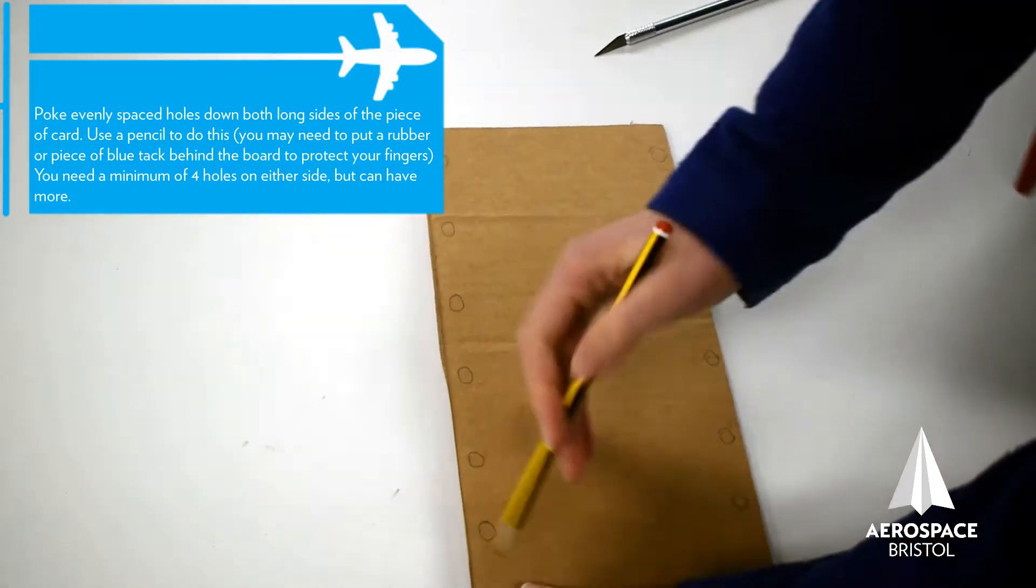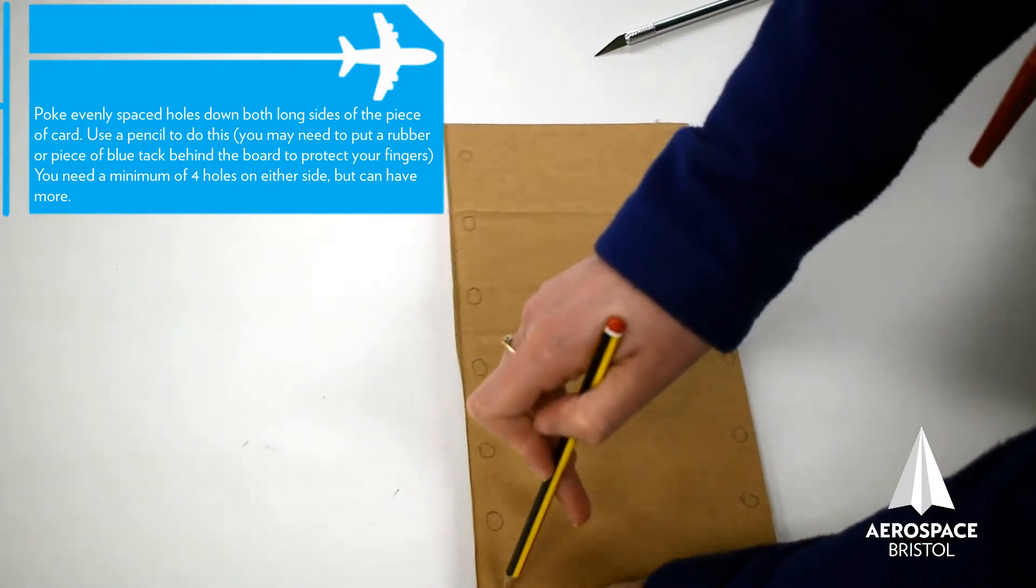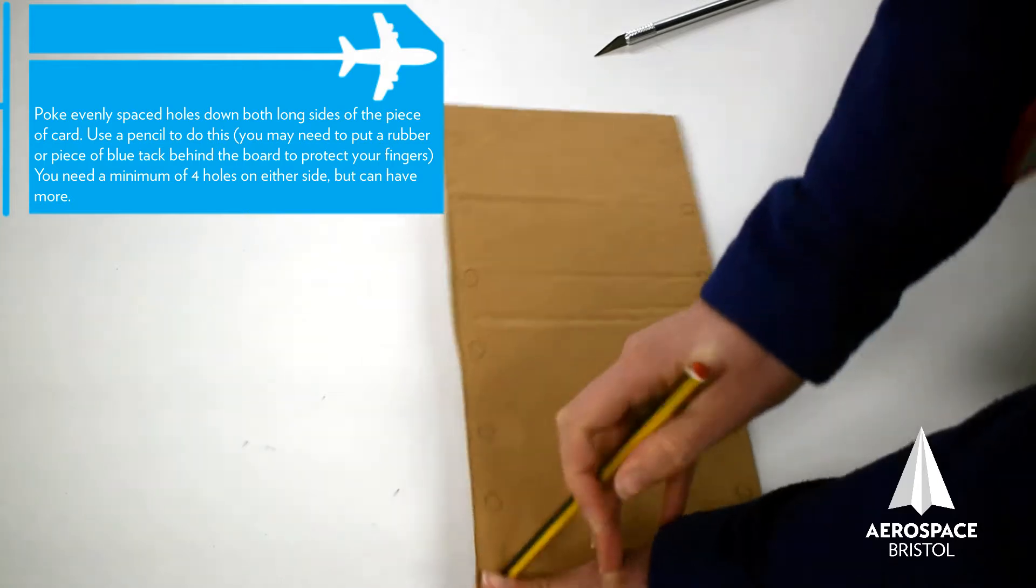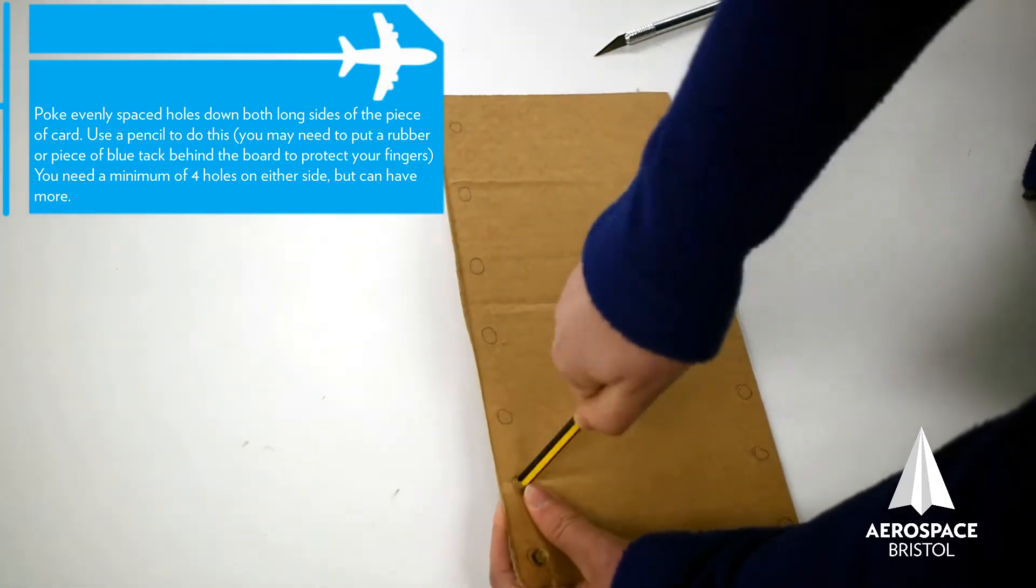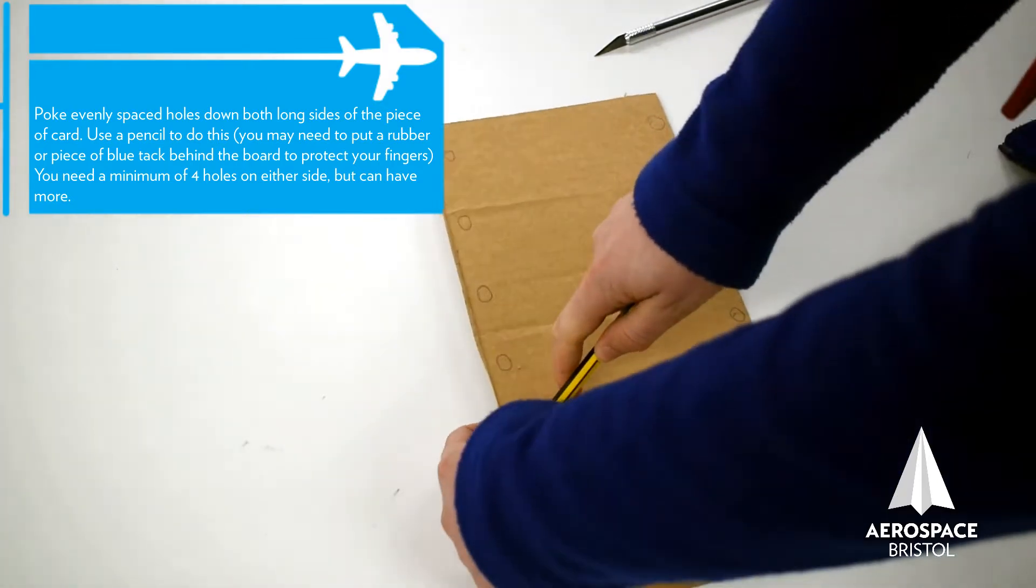Now we need to make these into holes. You can do this by puncturing through the cardboard with a pencil. It might be a good idea to put a rubber or a piece of blu-tack behind to protect your fingers.